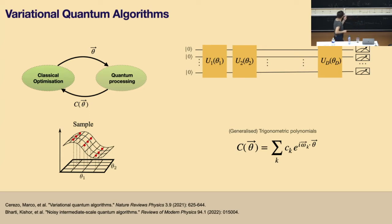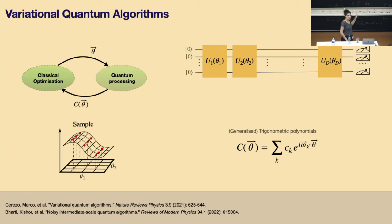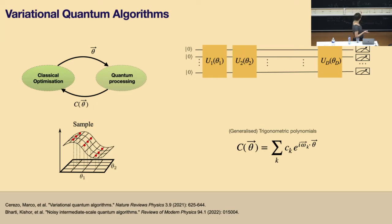You can look at how noise affects the class of parametrized circuits by looking at how the Fourier coefficients change when you run things on devices — both the Fourier coefficients and the spectrum change.